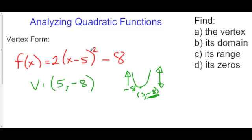The vertex is 5, negative 8. The domain is all reals because x is not being bounded here, x can be anything. And the range is that y has to be greater than or equal to negative 8. The reason is because negative 8 is my minimum and y can be anything above that. And we know that because our parabola is facing up from this 2 as a.